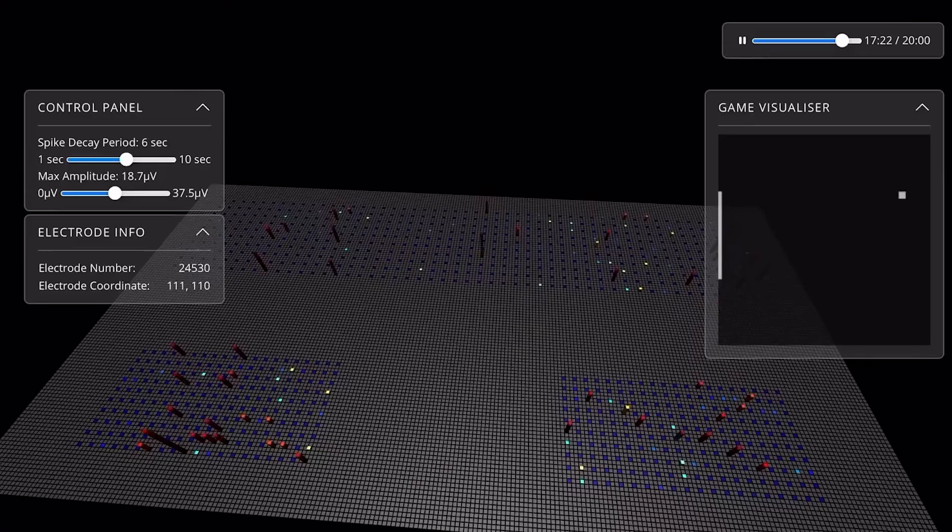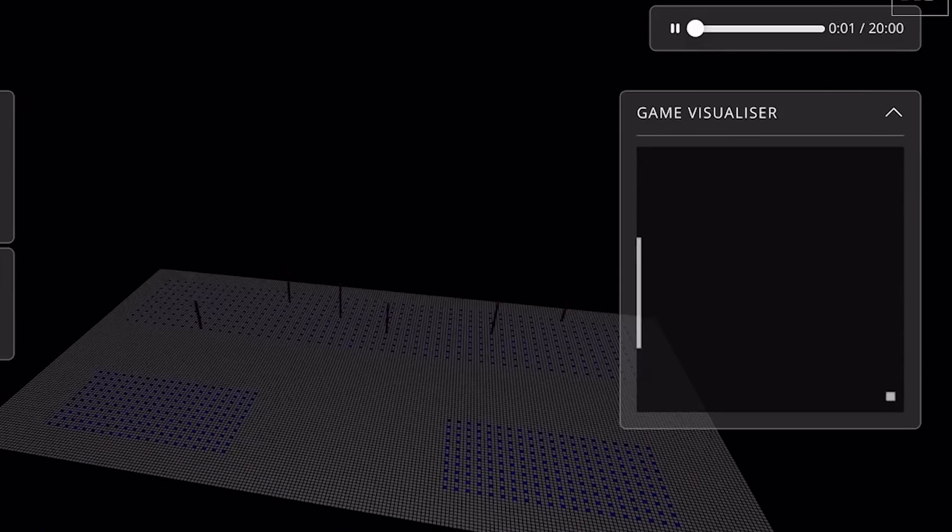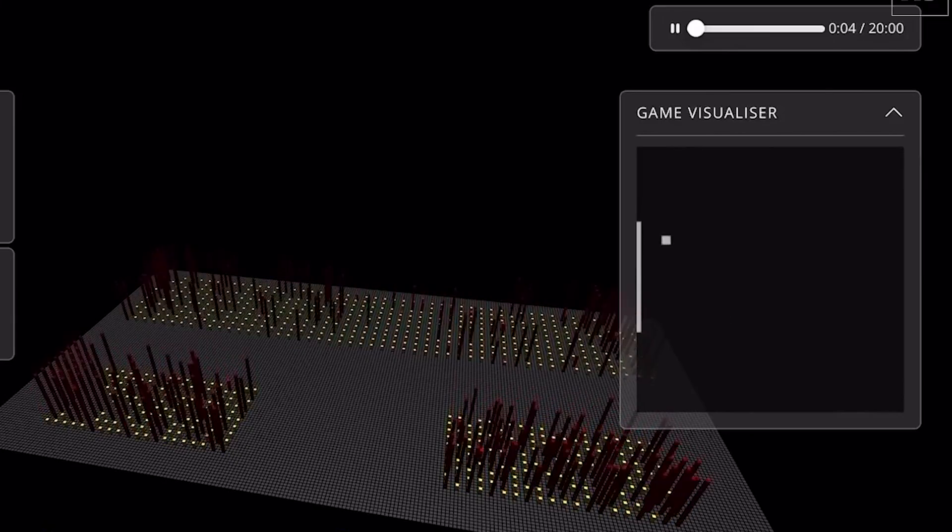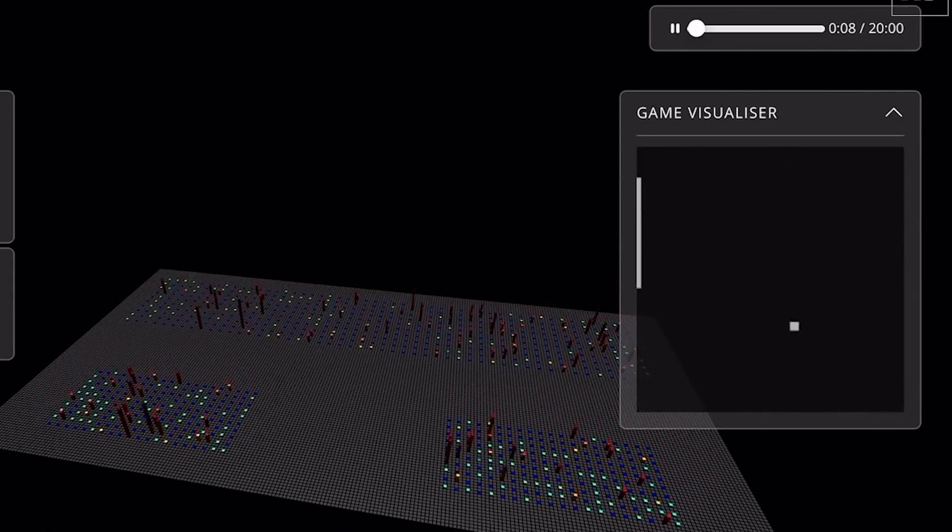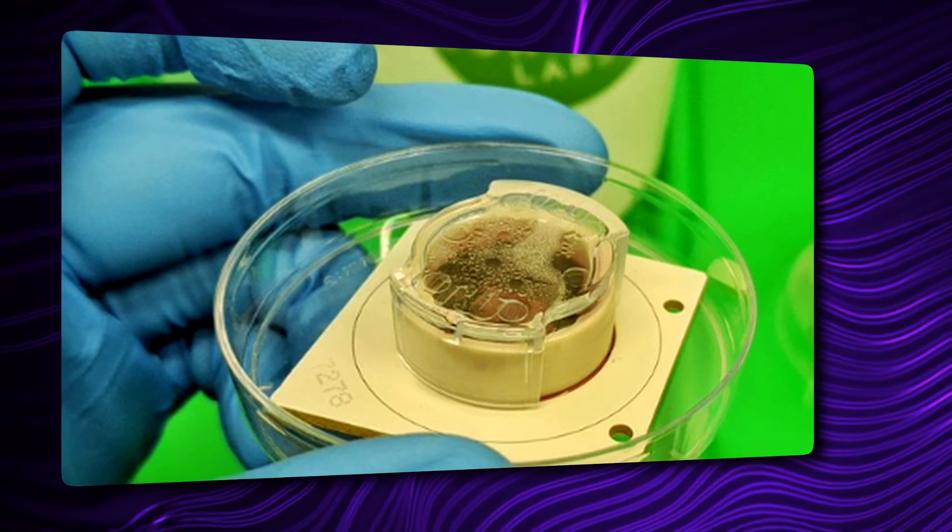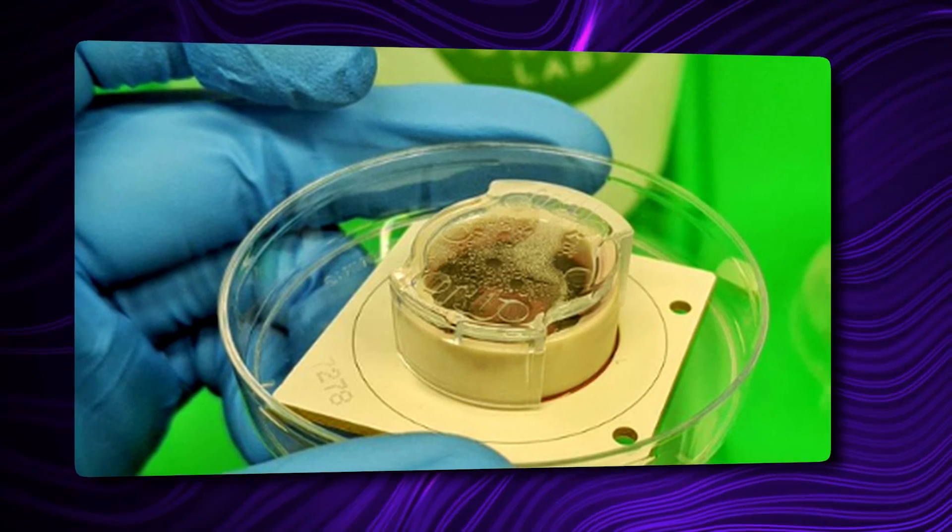Dish Brain quickly picked up on how to play Pong, much to everyone's surprise. The computer sent messages to the brain cells showing the location of the bouncing ball so that they could play the game. It started observing electrical impulses that were information flowing from the cells simultaneously.